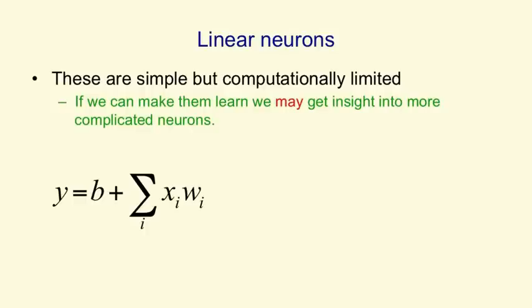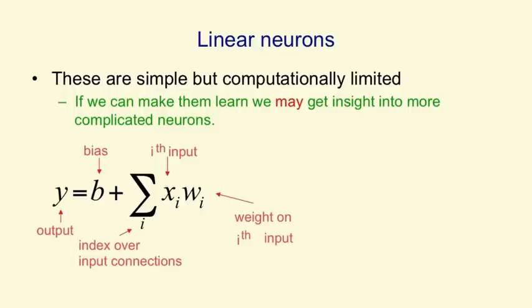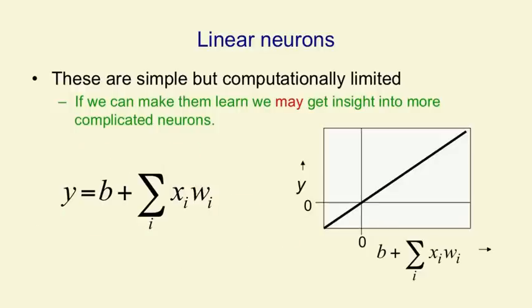In a linear neuron, the output y is a function of a bias of the neuron, b, and the sum over all its incoming connections of the activity on an input line times the weight on that line. That's the synaptic weight on the input line. And if we plot that as a curve, then if we plot on the x-axis the bias plus the weighted activities on the input lines, we get a straight line that goes through zero.